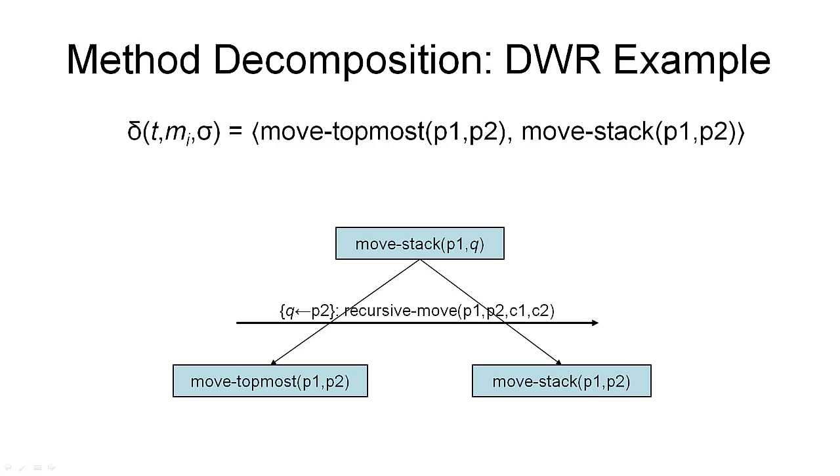We can visualize the process of decomposition by means of a decomposition tree, which is what you see here. The decomposition tree has, as its root, the task T. So this is the task T that we're trying to decompose. In this case, the task was to move the stack from P1 to some other pile Q. Then we have a method instance that we're using to decompose the task with. And the method instance here is recursive-move P1, P2, C1, C2.